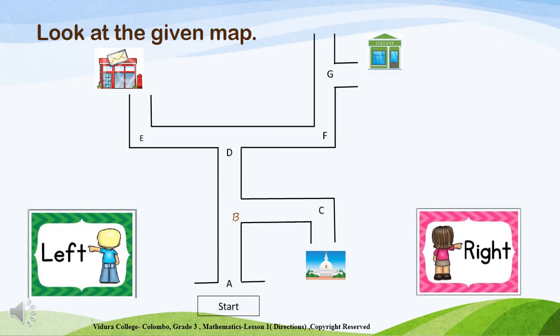Now we are going to use the knowledge of left and right for further exercises. Look at the given map. You can see a picture of a temple, a picture of a post office, and a picture of a library. I have marked the starting point as Junction A. You can also see junctions marked as Junction B, Junction C, Junction D, Junction E, Junction F, and Junction G.